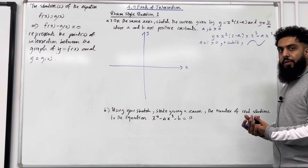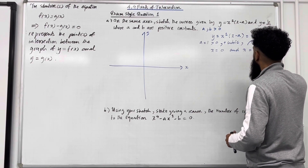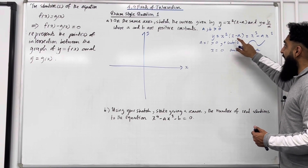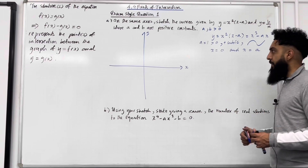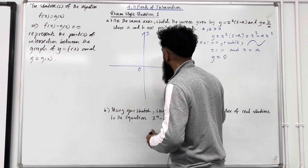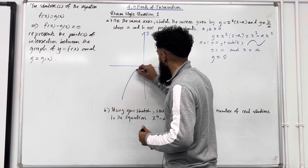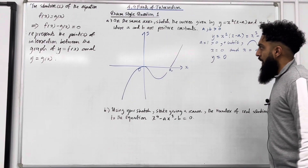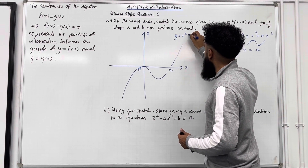Now, if I substitute y = 0, I can work out my x-intercepts. My x-intercepts will be x = 0 and x = a. Notice that x is a repeated factor, so the cubic graph will bounce at x = 0, but at x = a the cubic graph will cut. Substituting x = 0 gives y = 0. So my cubic graph will bounce at x = 0 and cut at x = a. I can label this cubic graph as y = x²(x − a).